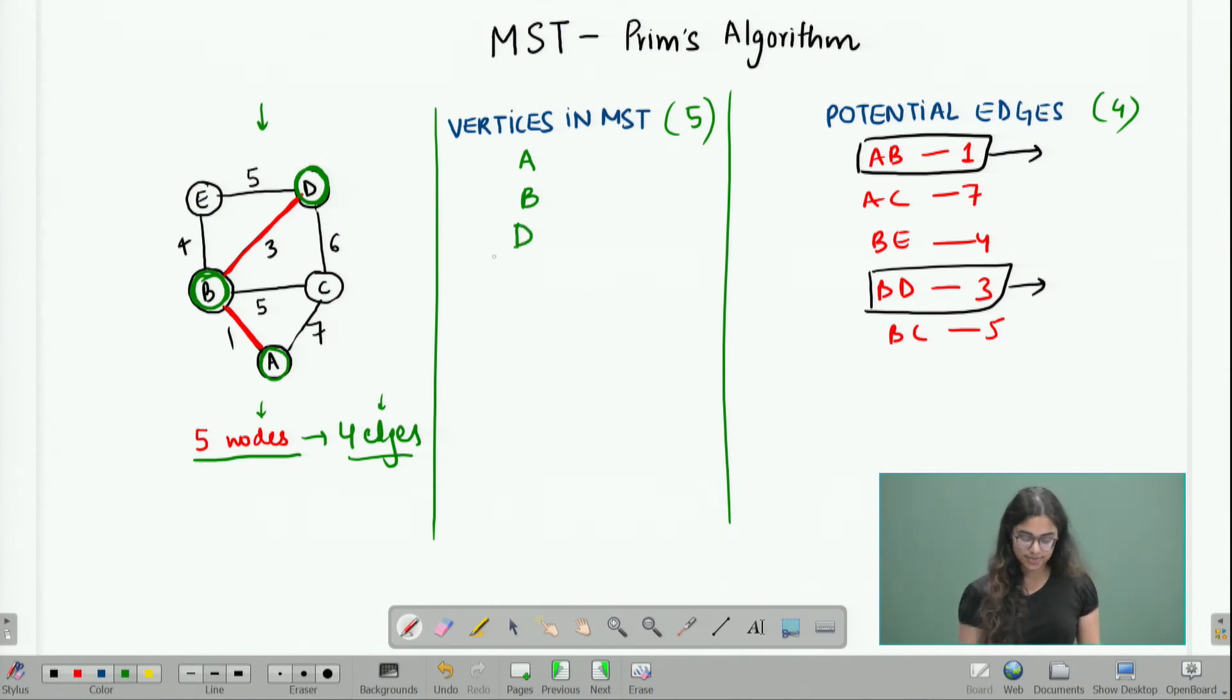Again, as soon as I choose vertex D, I should include edges which have D as one of its endpoints in my potential list. So, I add DE with weight 5 and I add DC with weight 6.